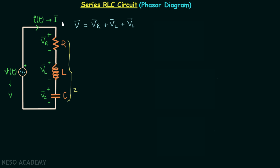When you multiply I phasor with Z you will have V phasor. Therefore, V phasor equals I phasor multiplied by Z. VR phasor equals I phasor multiplied by R, and VL phasor equals I phasor multiplied by jXL.